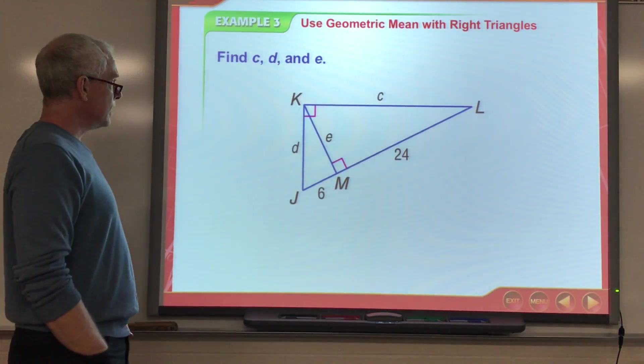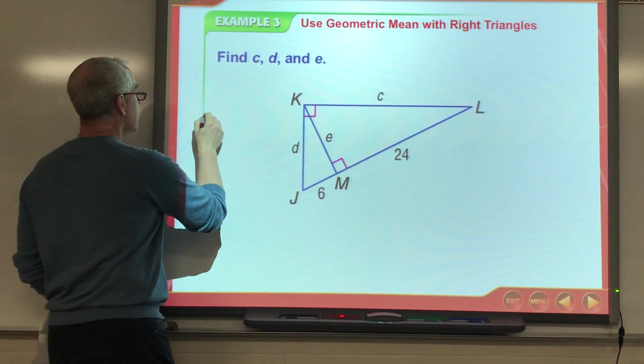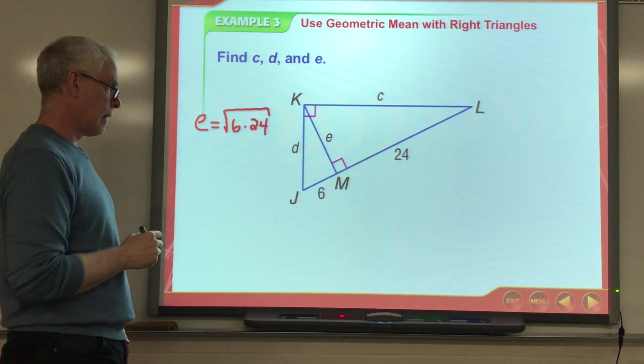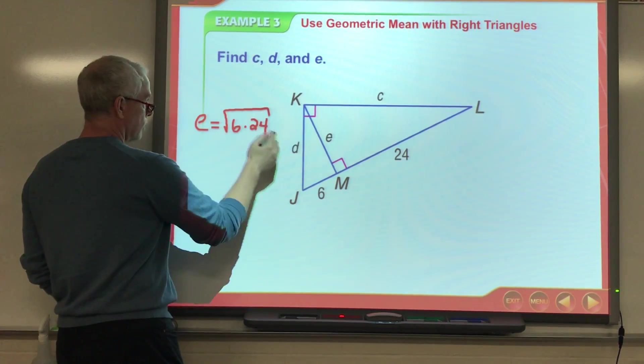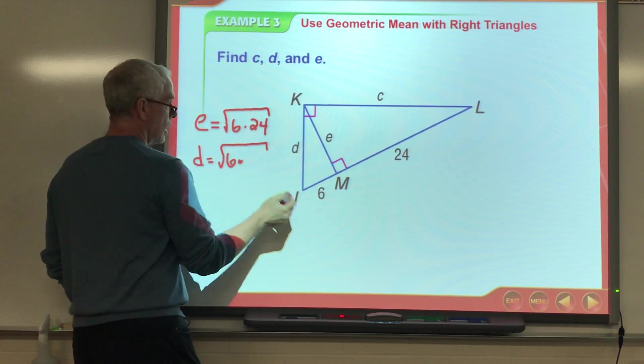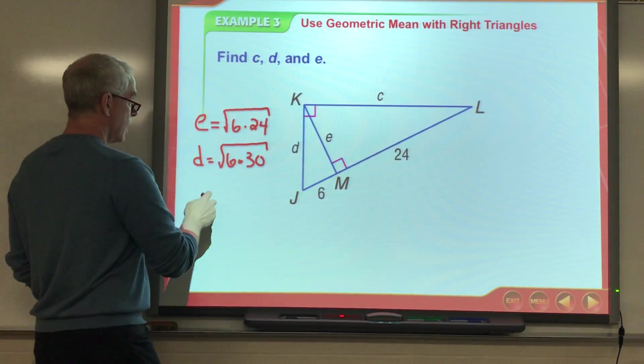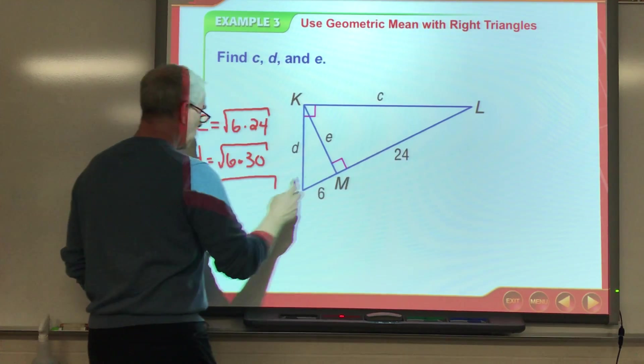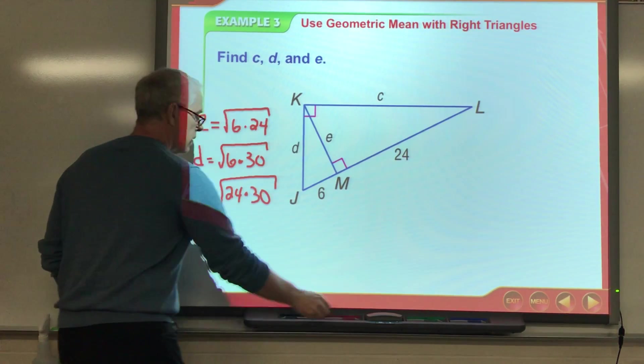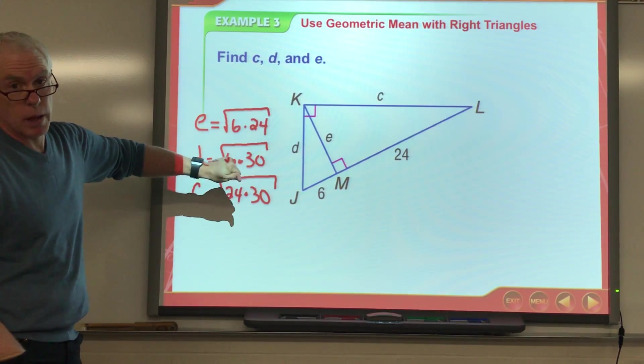All right. Find C, D, and E. Based upon the previous slide, E is that altitude. So, E is the square root of 6 times 24. Okay. The two parts. D is the square root of the adjacent part and the entire hypotenuse. So, the square root of 6 times 30. And C is the square root of the adjacent part, which is 24, times the whole hypotenuse, which, again, is 30. Okay. That's how I'm going to solve each of those. They'll go through it with us on the next couple screens so you'll get the answers. But, these are the formulas I'm using from that previous slide.